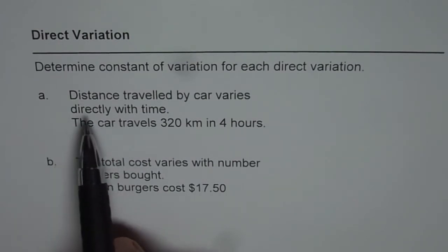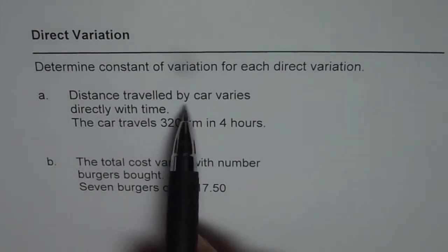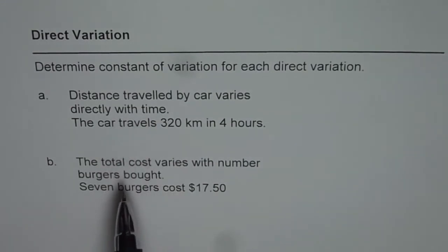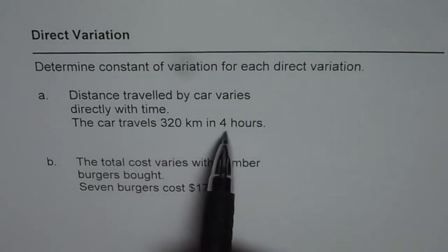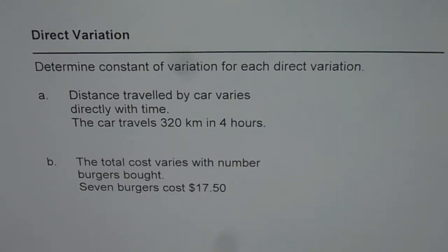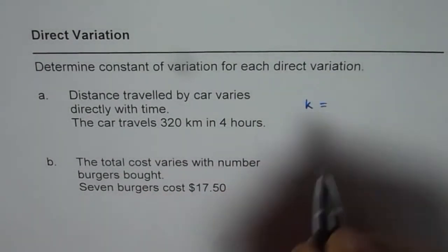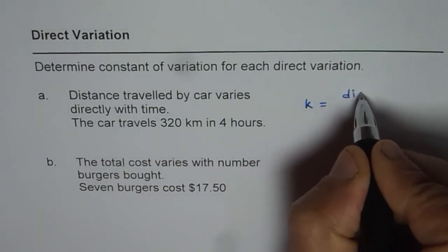Now, we are given distance travelled by car varies directly with time. That means the ratio of distance travelled and time should be constant. And this constant gives you the constant of variation. So, the constant of variation k for us is distance over time.